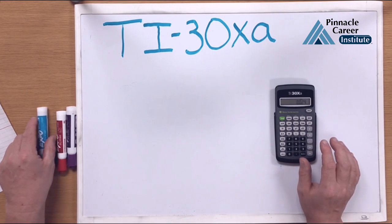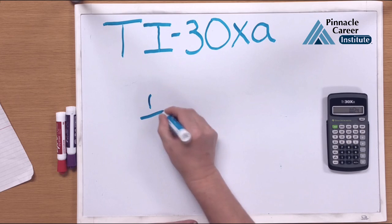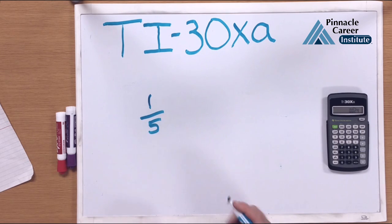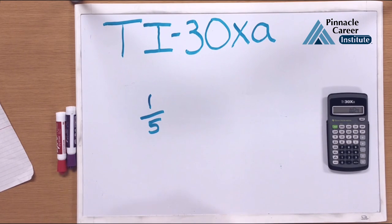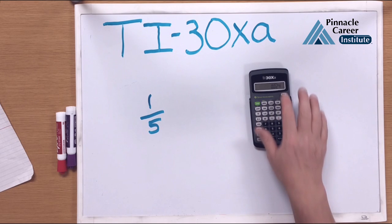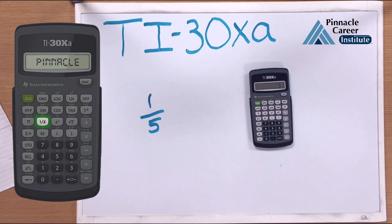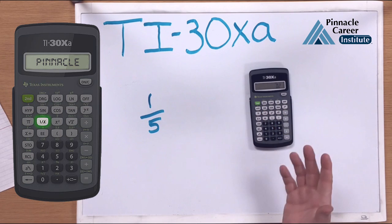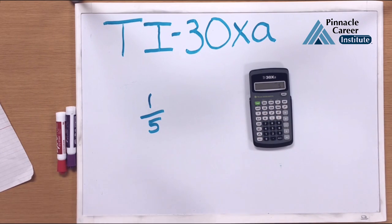In electronics and electricity, there are a lot of reciprocals. A reciprocal would be 1 over 5 — it's just dividing a number into 1. If I want to find the reciprocal of 5, I would hit the 1/X button, which is 2 above the 7. In this case, 1 over 5 is 0.2. If I hit it again, I'll go back to 5. Reciprocals of each other — you can go back and forth on them. That's how you find reciprocals.